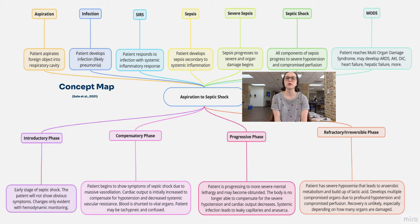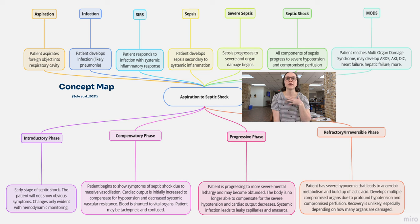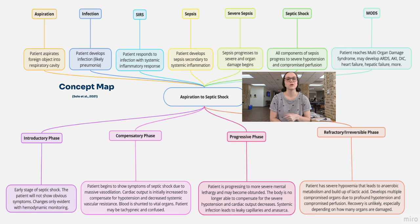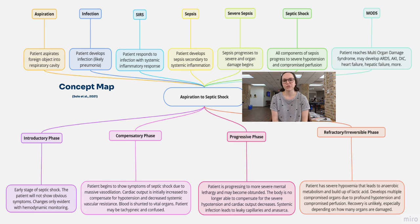Then we are led to septic shock, where we're going to see severe hypotension, diminished perfusion to all of our major organs, which may eventually lead to MODS — multi-organ damage syndrome. So we're going to see ARDS, AKI, DIC, heart failure, liver failure — all the things. This is really difficult to recover from. The patient is unlikely to recover at this point, but we do our best.